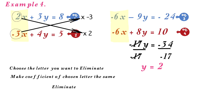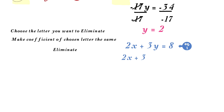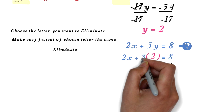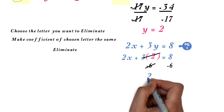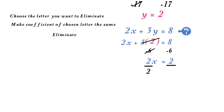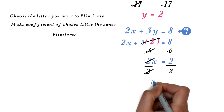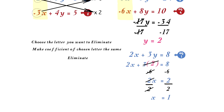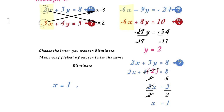To find the x value, substitute y equals 2 into any of the equations. I chose equation 1: 2x plus 3 times 2 equals 8. 3 times 2 is 6. Subtract 6 from both sides — this cancels out, and 8 minus 6 equals 2. Next, divide both sides by 2 — the 2 cancels out. 2 divided by 2 is 1. Therefore x equals 1. Our final answer is therefore x equals 1 and y equals 2.